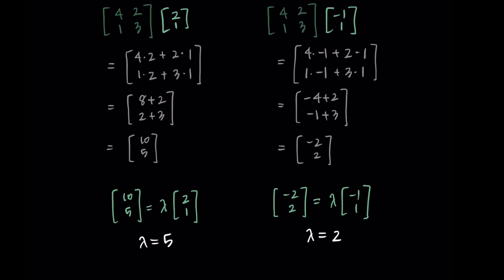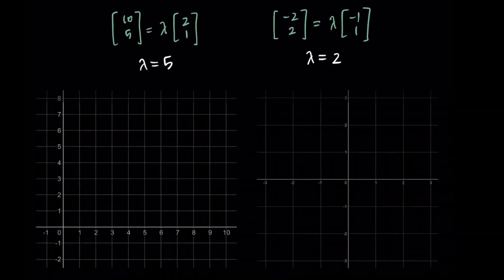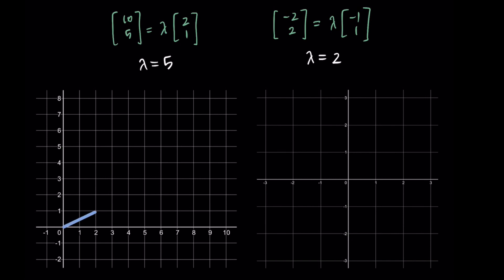We'll learn in later videos how to find these eigenvalues without starting with the eigenvectors. We'll learn how to do all of this from scratch. But for now, we're just getting used to the ideas. I want to close by just showing what this looks like graphically. If we start with our eigenvectors on these graphs, I'm plotting the eigenvector [2, 1] and the eigenvector [-1, 1].